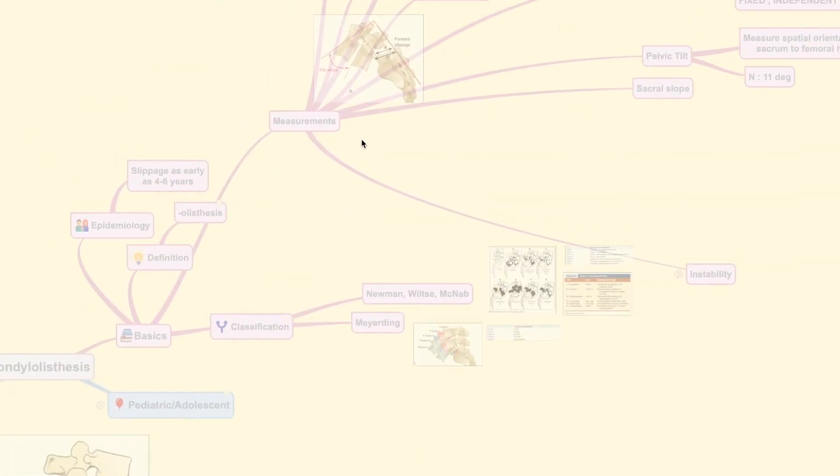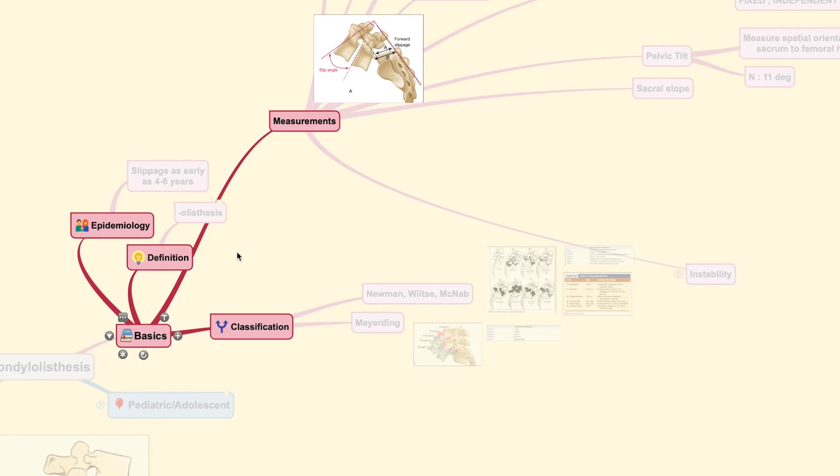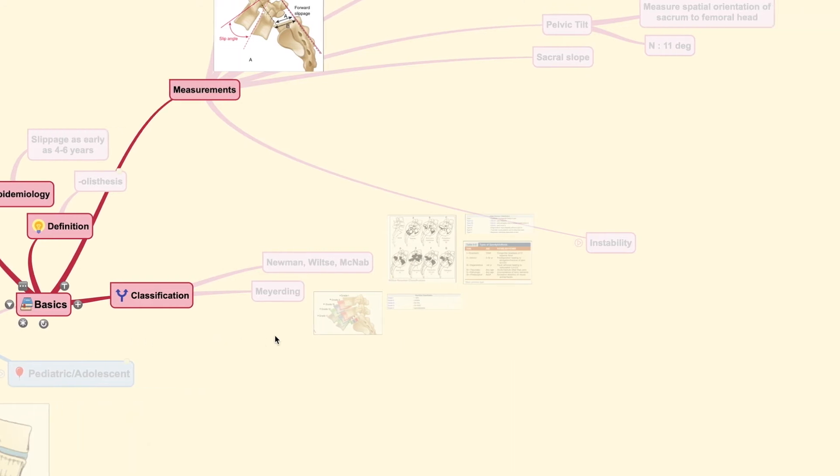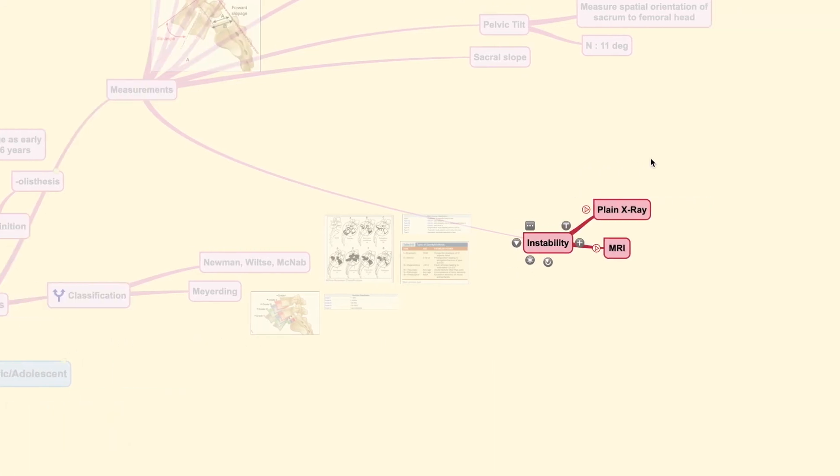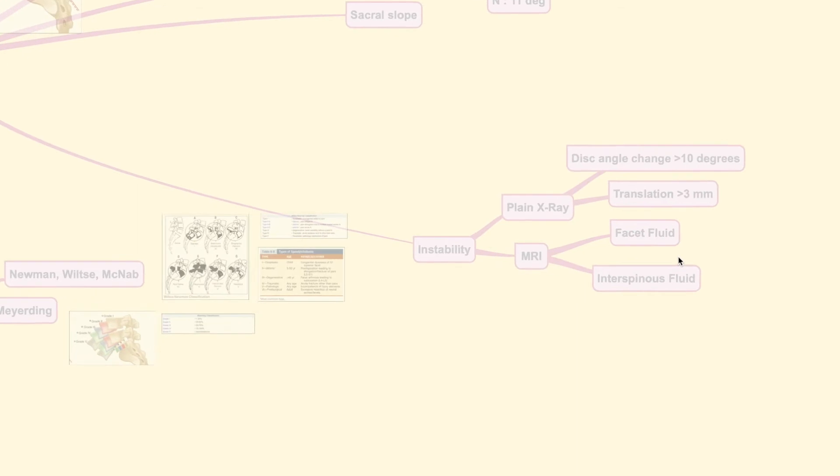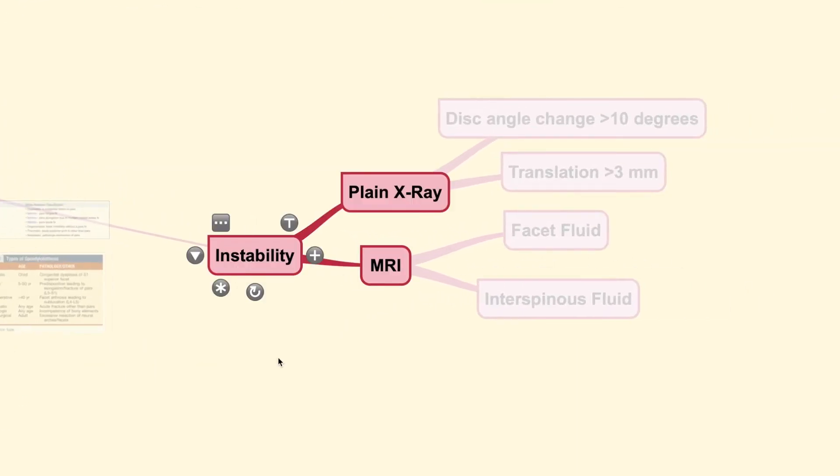Once you have known all these measurements and you have learned about all the basics regarding the spondylolisthesis case, we could move on to discussing each and every type of spondylolisthesis. Oh, I'm sorry, there's a little bit explanation regarding instability that you could see here. Because instability is a word that is now very commonly used in practice. Patients usually come and you diagnose them with instability. You need evidence, you need proof to show the patient that they indeed have instability that needs treatment. And to be able to point that out, you need to find these findings.